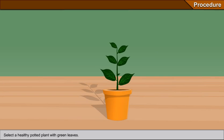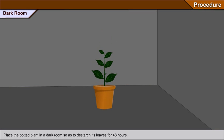Procedure: Select a healthy potted plant with green leaves. Place the potted plant in a dark room so as to destarch its leaves for 48 hours.